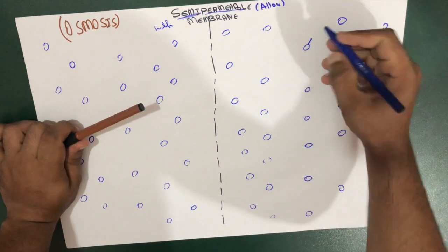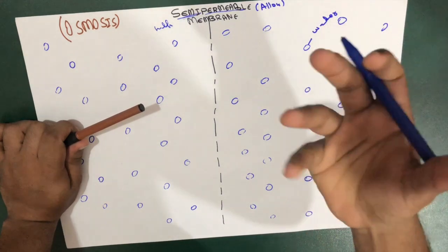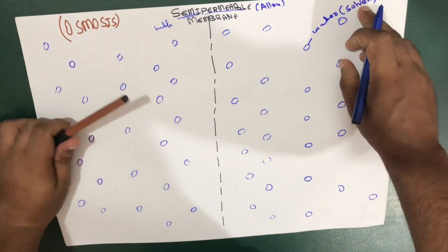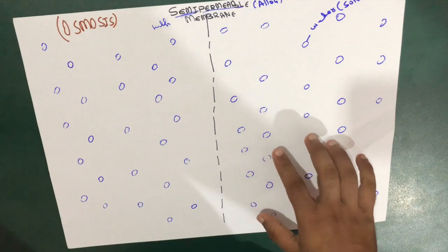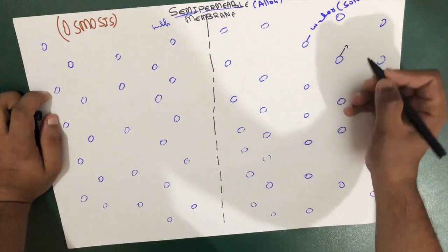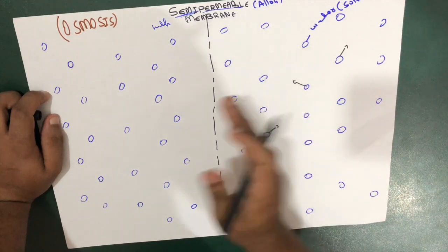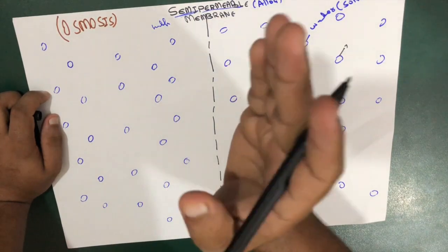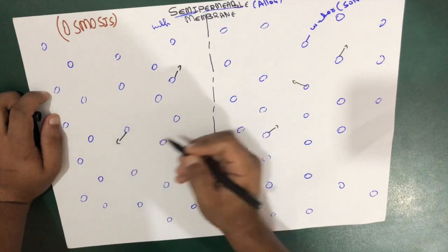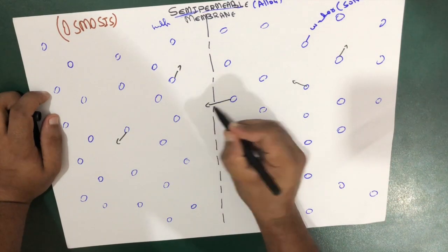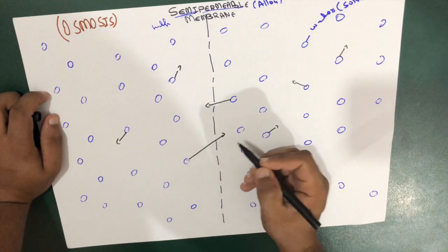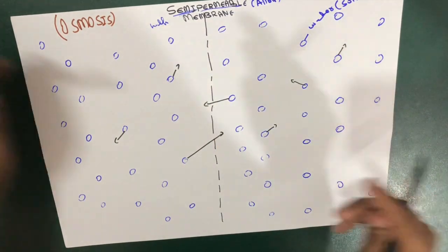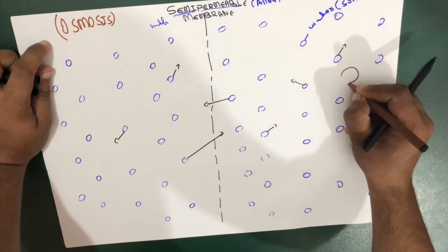Particles that are small enough to pass through, like water molecules, are in abundance. Anything present in abundance we call the solvent. Water molecules are our solvent, and they are continuously in random motion. In the beginning, we have equal concentration of water on both sides of the semi-permeable membrane, moving randomly in all directions.